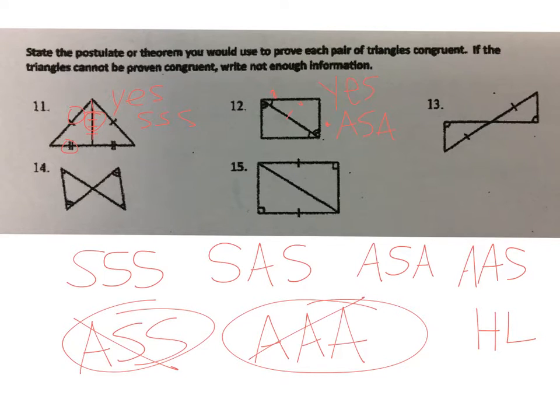Alright, number 13 looks like a bow tie, so I know that I've got congruent angles here because they're vertical angles to each other. It looks here like I have an angle, angle, side. So this would be yes by AAS.